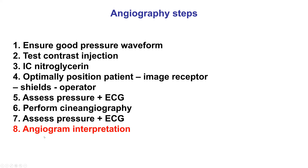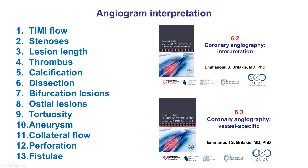Finally, the eighth and last step of angiography is to interpret the angiogram that has been obtained. This step depends critically on excellent performance of the angiogram based on the previous steps. If the quality of the angiogram is poor — such as when there is poor filling of the coronary artery or when not all coronary segments have been visualized in orthogonal projections — interpretation may not be possible. Several characteristics examined in every angiogram will be discussed in videos 6.2 and 6.3.